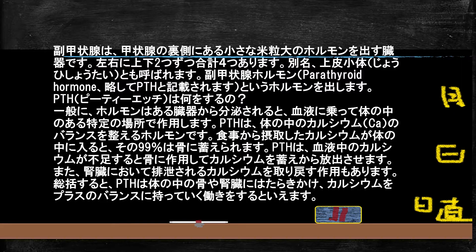副甲状腺はどこにあるかというと、喉のところにあるハート型の臓器、甲状腺の裏側に小さな米粒大の臓器が4つ付いています。人によっては4つではない場合もあるらしいですが、大体普通の人は4つあります。この上皮小体とも呼ばれる副甲状腺から、PTH（副甲状腺ホルモン）が分泌されます。